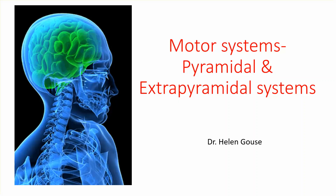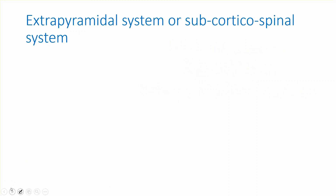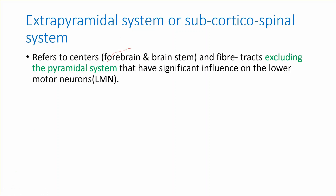Good morning dear students. Today we'll look into the motor systems related to the pyramidal and extrapyramidal systems, with focus on the extrapyramidal system. The extrapyramidal system is also called the subcorticospinal system. It refers to the centers related to the forebrain and the brainstem, and the fiber tracts which exclude the pyramidal system, so it is away from the pyramidal system. It also has influence on the lower motor neuron.